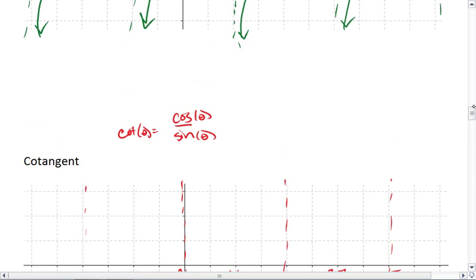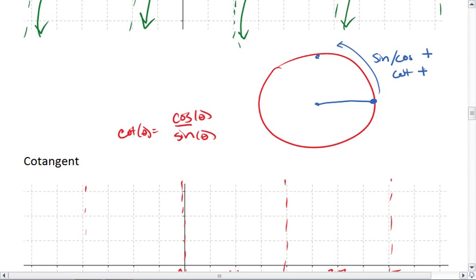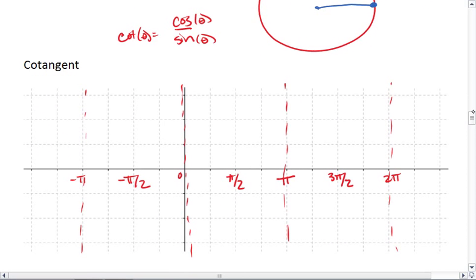But what happens with cotangent is that we start off with a vertical asymptote, and then we go towards 0. And keep in mind, here, sine and cosine are both positive, which makes cotangent positive. So we start at positive infinity and we're coming down to 0.